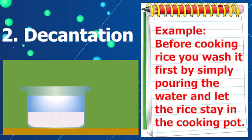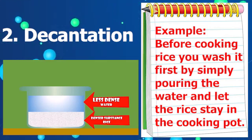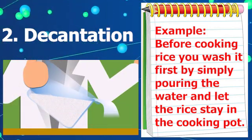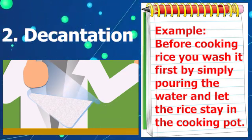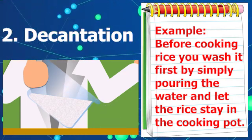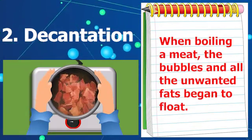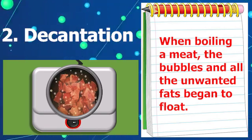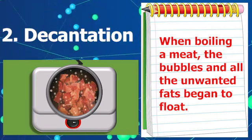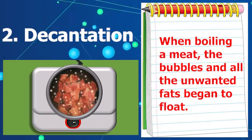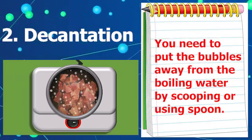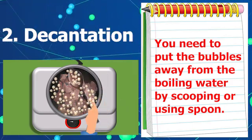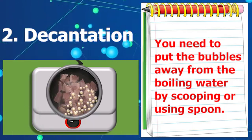Before cooking rice, you wash it first. You use decantation to separate the rice from the water by simply pouring the water out and letting the rice stay in the cooking pot. Similarly, when boiling meat, bubbles and unwanted things like fats begin to float. You put them away by scooping with a spoon — this method also involves decantation.